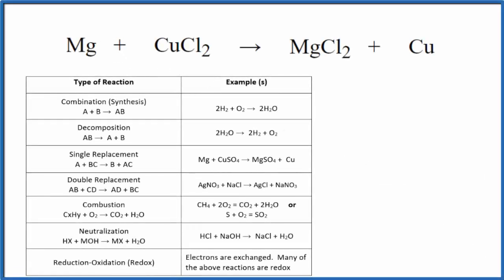Let's look at the type of reaction we have here for Mg plus CuCl2—that's magnesium plus copper chloride. We have this table here that'll help us, but first let's write the states in for each of these compounds.